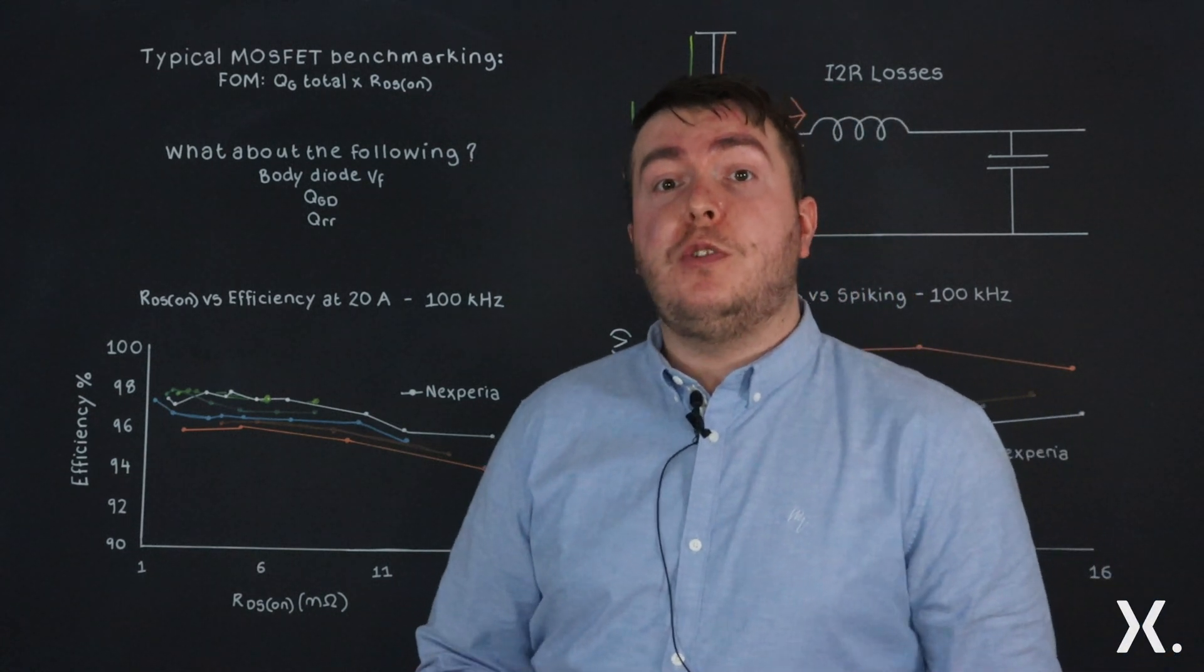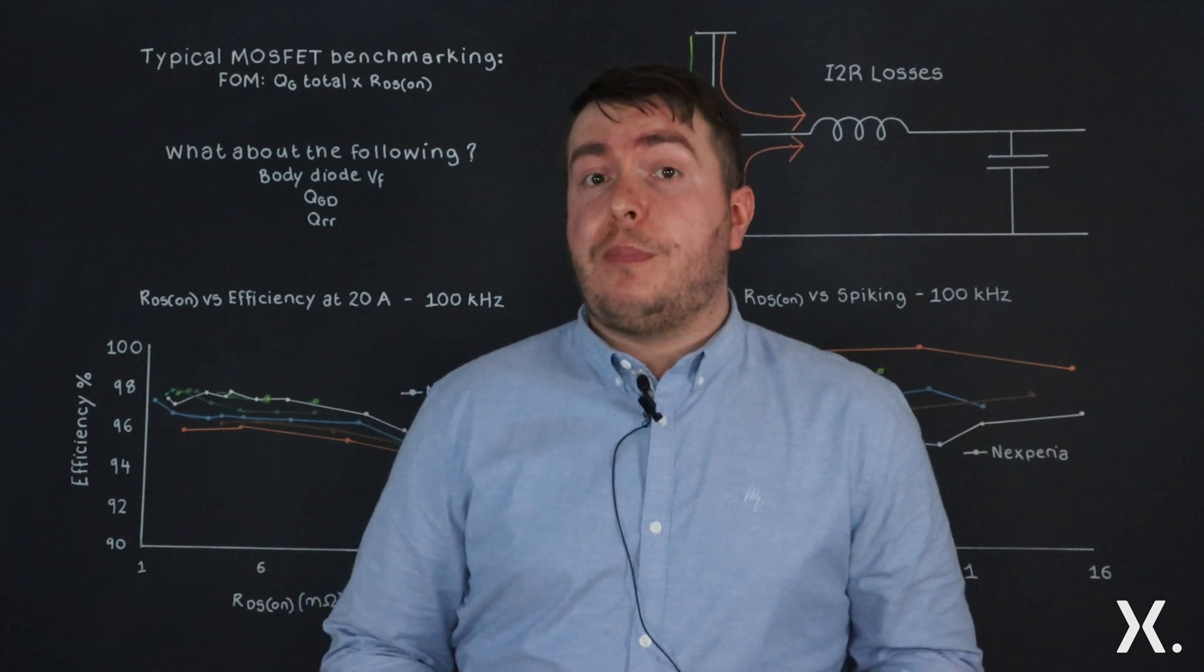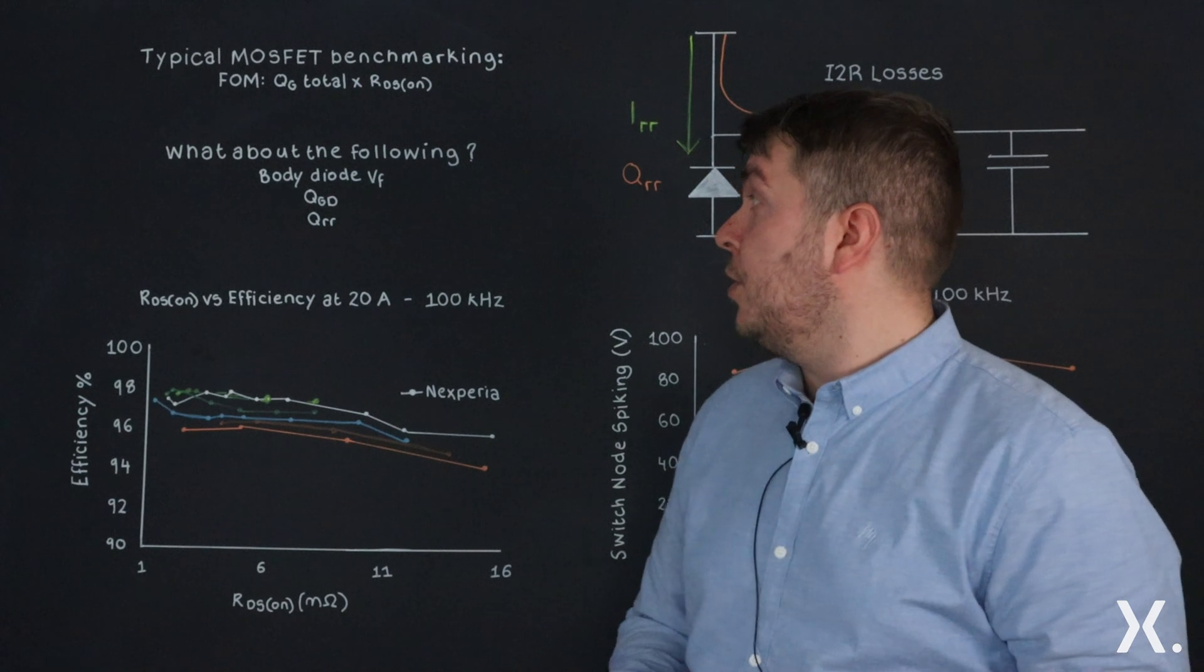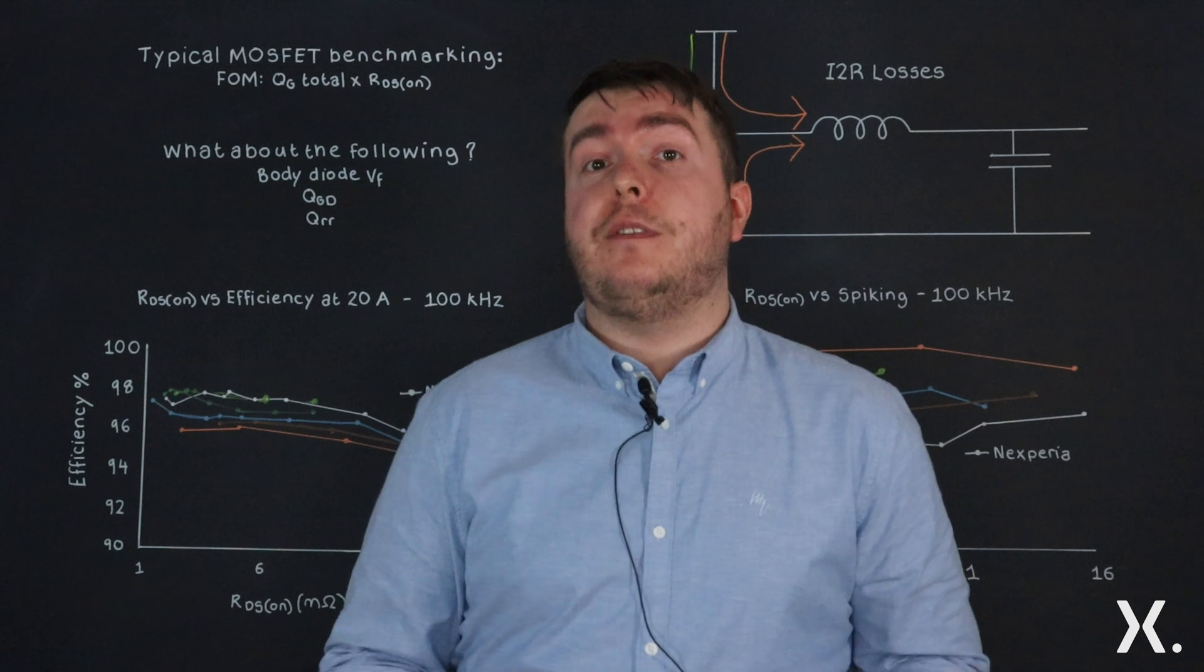The industry has been working towards reducing both parameters, but when selecting a MOSFET, other parameters are often forgotten. These parameters are body diode VF, QGD, and QRR, which all play a significant role in having a more efficient device.